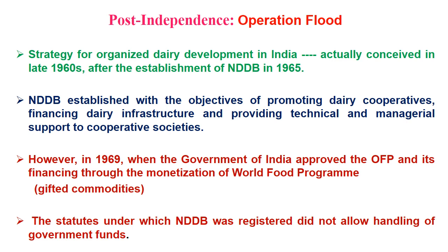The World Food Program involved developed countries gifting India extra food materials, especially skim milk powder and butter oil. The Government of India wanted to sell these and use the money for the Operation Flood Program. However, as per regulations, NDDB could not handle such government funds. This was solved by another way — by forming a new organization, the Indian Dairy Corporation (IDC). In 1970, the Government of India established IDC as a public sector company.